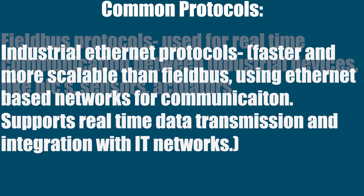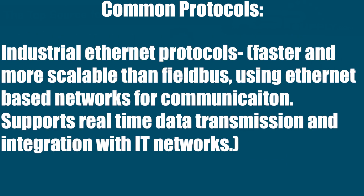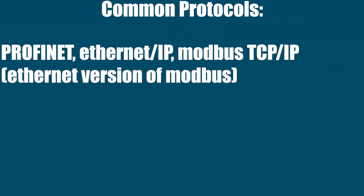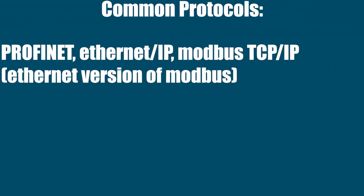Next, we have industrial Ethernet protocols. These are faster and a lot more scalable than fieldbus because they use Ethernet-based networks for communication. They support real-time data transmission and also integrate with IT networks. Some examples are PROFINET, Ethernet IP, and Modbus TCP/IP — the Ethernet version of Modbus.